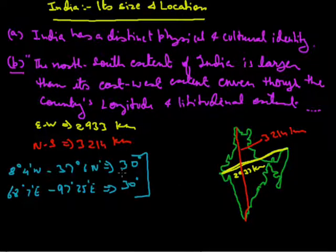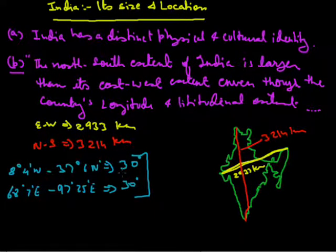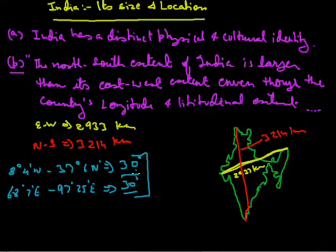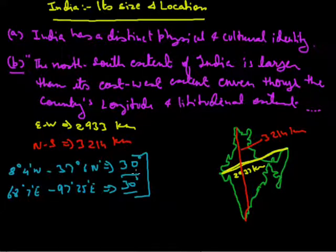So my question to you is: what is the shape of India — square or rectangle? If the extent is 30 degrees both ways, it must be a square. But it is wrong — India is not square. I will tell you why.